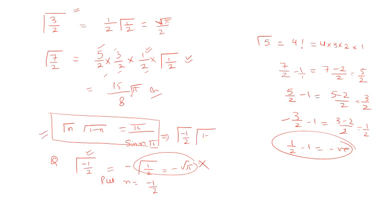So this will be gamma minus half, 1 minus minus half, that means plus half, equals pi upon sin n. You have already taken minus half, so minus half pi. So this minus half you need to find out. This will be 2 times 1, 2 plus 1, 3 by 2.